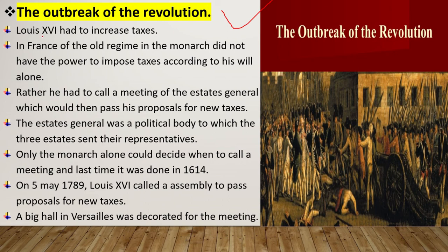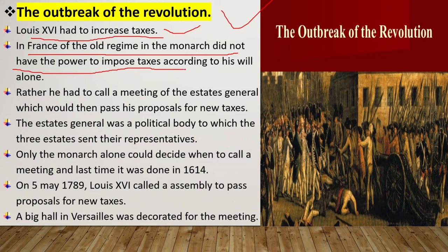We have seen that Louis XVI had to increase taxes. In France of the old regime, the monarch did not have the power to impose taxes according to his will alone. He had to call a meeting of the Estates General, which would then pass his proposal for new taxes.